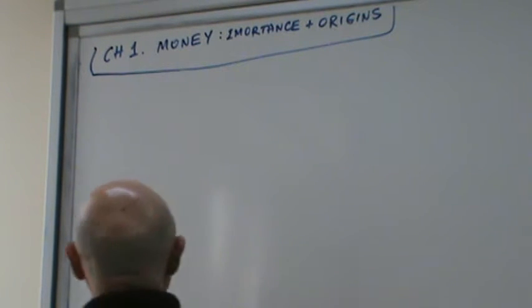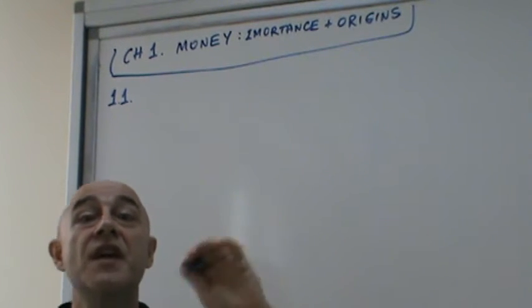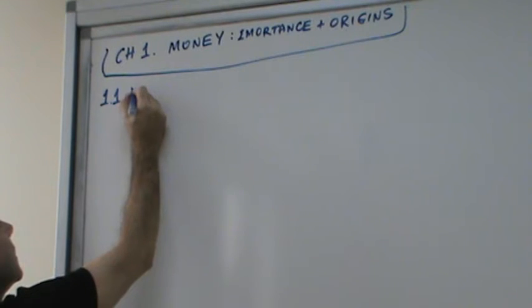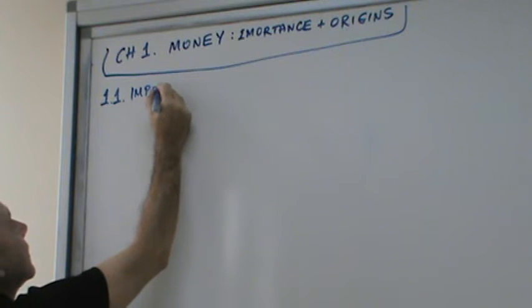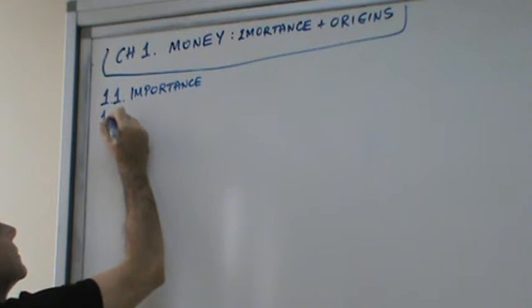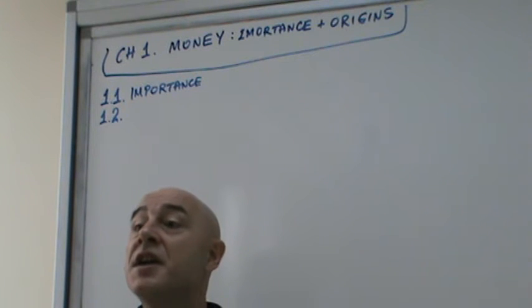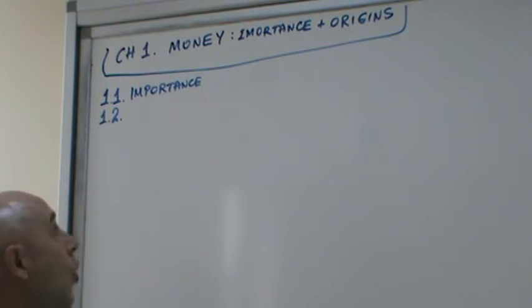Okay, so Chapter 1, Section 1.1 was what? Importance. I already covered and explained origins. Origins are associated with the transition from direct exchange to indirect exchange as a medium of exchange.